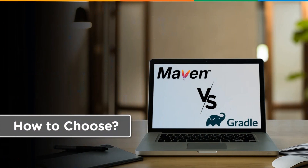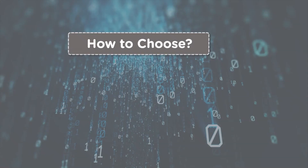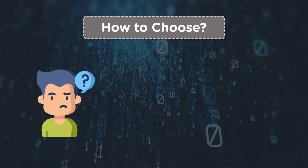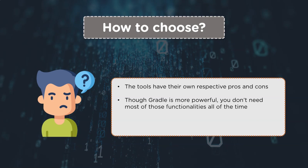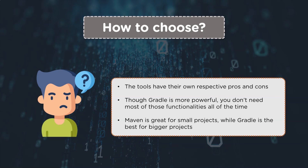Now that we know the differences between the two build tools, it sometimes becomes critical to decide which tool would be a better fit for a project. Both Gradle and Maven have their own set of advantages and disadvantages. Gradle is undoubtedly the more powerful tool, but it has many functionalities that are not always needed, and dealing with so many functionalities is slightly difficult. Maven is great for small projects and should be used when dependency management, modularization, consistency, lots of plugins and conventions are preferred.